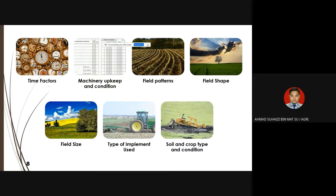The time factors include machinery upkeep and condition. Machinery upkeep and condition must be done beforehand, before the operation — this should be done in the workshop. That's why when you go to a agricultural training centre, they must maintain machinery at best performance: readiness of tractors, implements at the back, and so on.